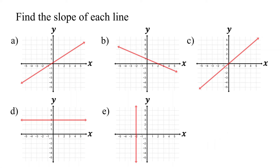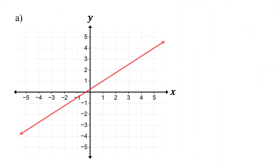In this lesson, you will learn how to find the slope of a line from a graph. We will cover examples with positive, negative, zero, and undefined slopes. The slope of a line is defined as rise over run. Rise is the vertical change between two points on a line, and run is the horizontal change. By counting the rise and run between two points, we can easily determine the slope of a line.